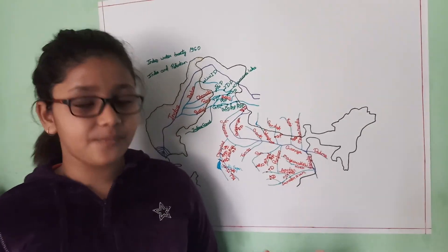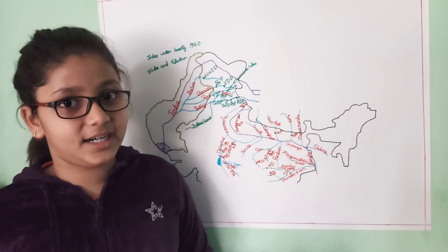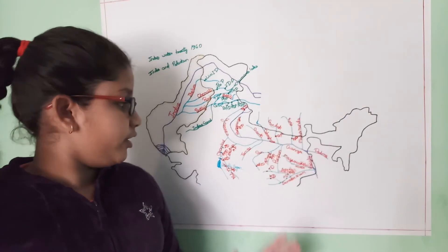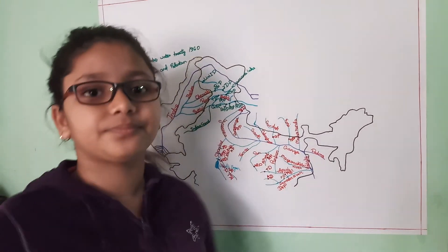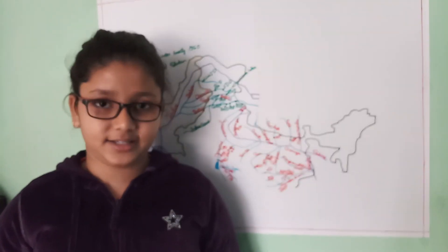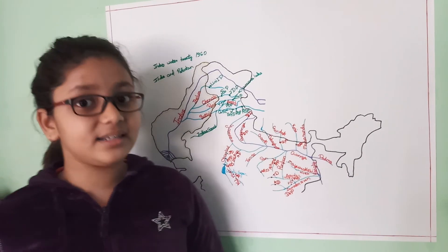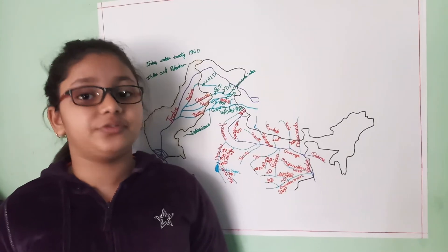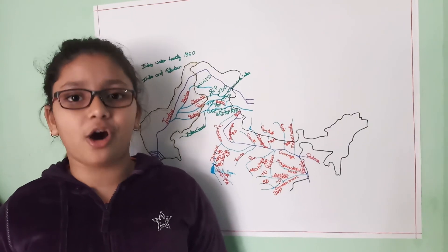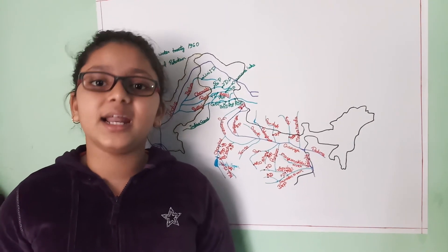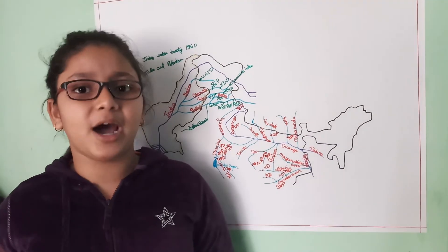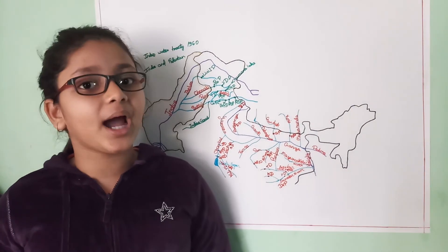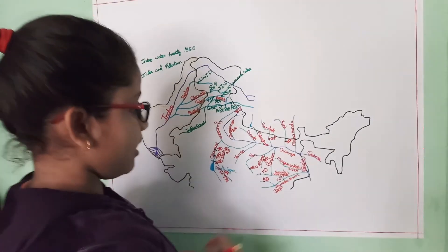Then comes the Mayurakshi project, which is a joint project of Jharkhand and West Bengal. It is also known as the Canada Dam and is constructed on the Mayurakshi river in Dumka, Jharkhand.